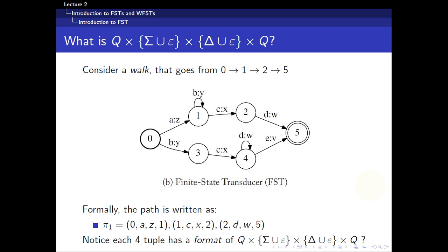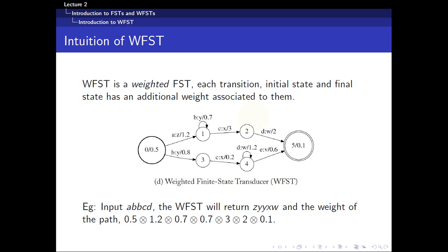So, for a WFST, a weighted finite state transducer, each transition, initial state, and final state now has an additional weight component to it. So you can see that this initial state here has a weight of 0.5, and this end state here has a weight of 0.1. Now, what this weight means will be discussed later on, but it could mean a variety of things, from cost to penalty to probability and so on and so forth.